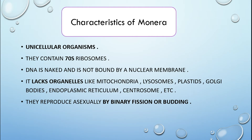Some characteristics of Monera: they are unicellular organisms; they contain 70S ribosomes; DNA is naked and not bound by a nuclear membrane. They lack cell organelles — organelles like mitochondria, lysosomes, plastids, endoplasmic reticulum, centrosome, and Golgi bodies are all absent in Monera.